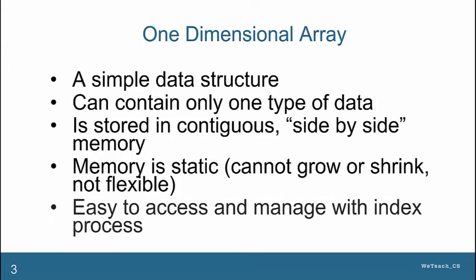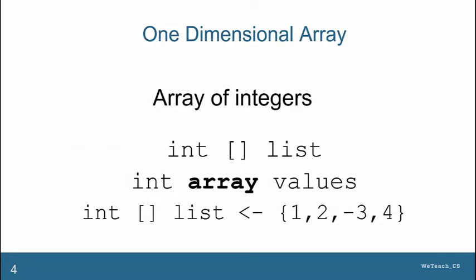An array is very easy to manage using a process called indexing. Here are some examples of arrays. As you can see, there are two ways you might see an array declared, either using the square brackets, as in this first example, or by using the word array to indicate it. The last line shows a typical way to instantiate an array using the curly braces, with values inside separated by commas.